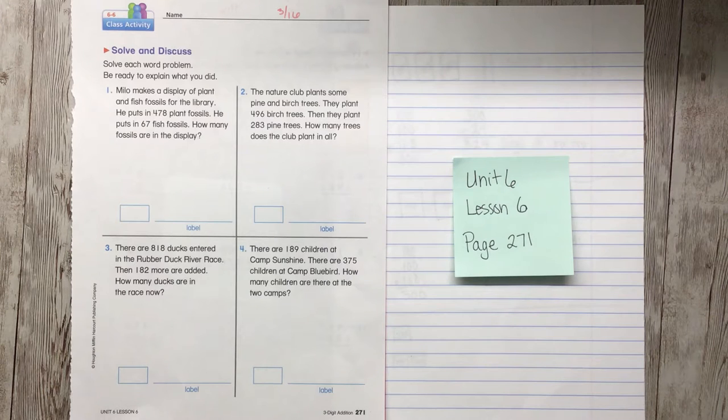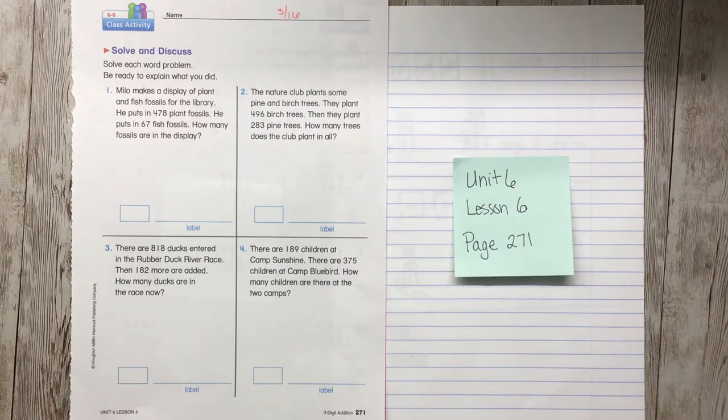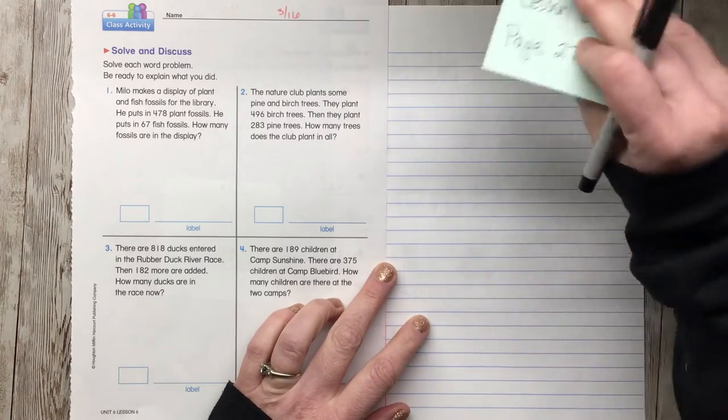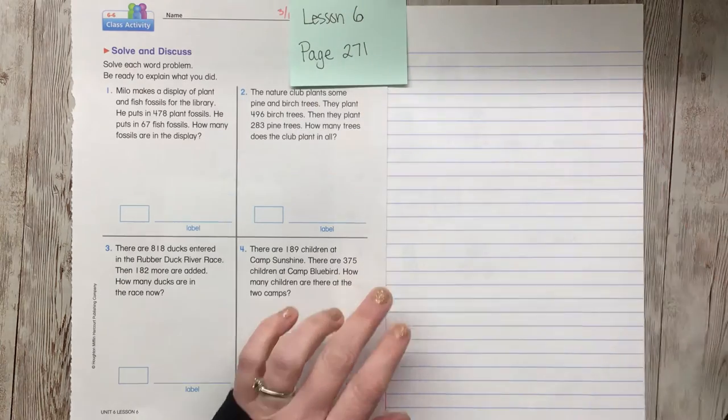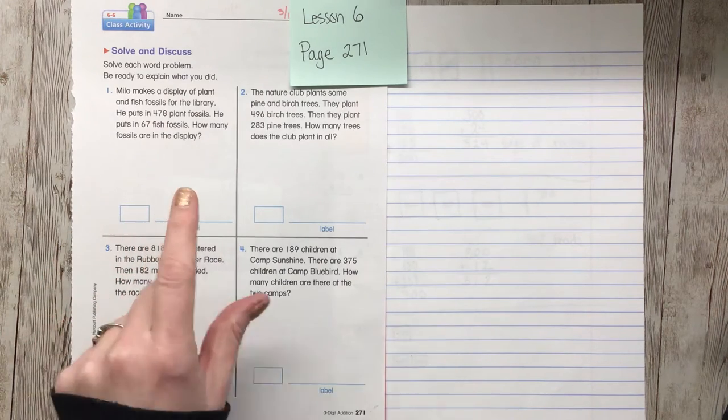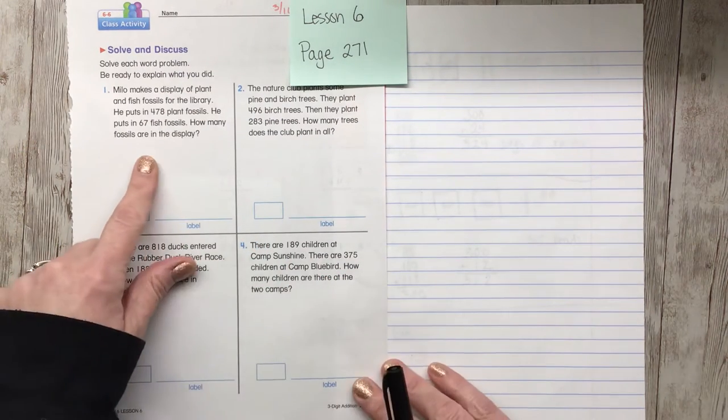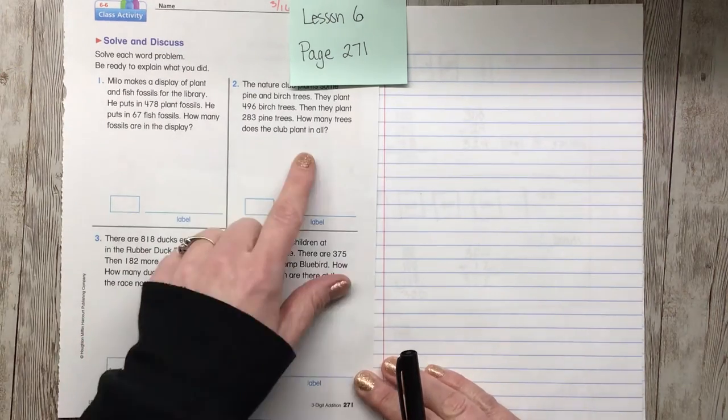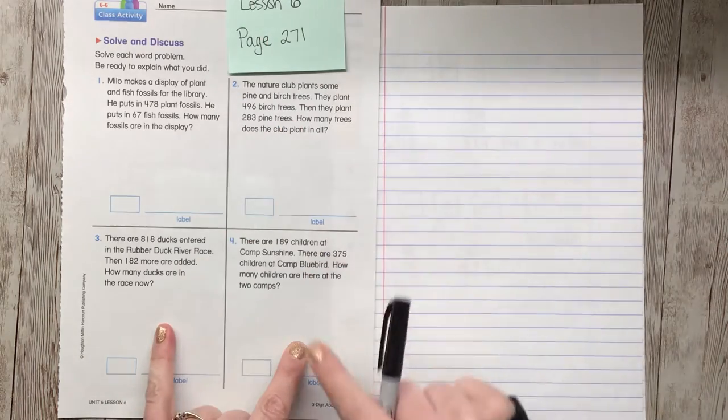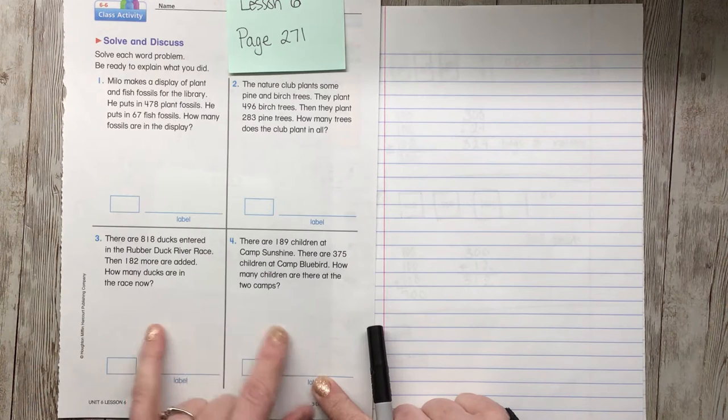Hi friends! Today we are working on Unit 6, Lesson 6, page 271. Here we go again with solving word problems, and this time it says be ready to explain what you did. Just like last time, I do, we do, you do. So I will do this one, I'll model this one for you. We will do this one together and you'll ask all the questions that you have about this equation, and then I will read these ones to you and you will solve them on your own.